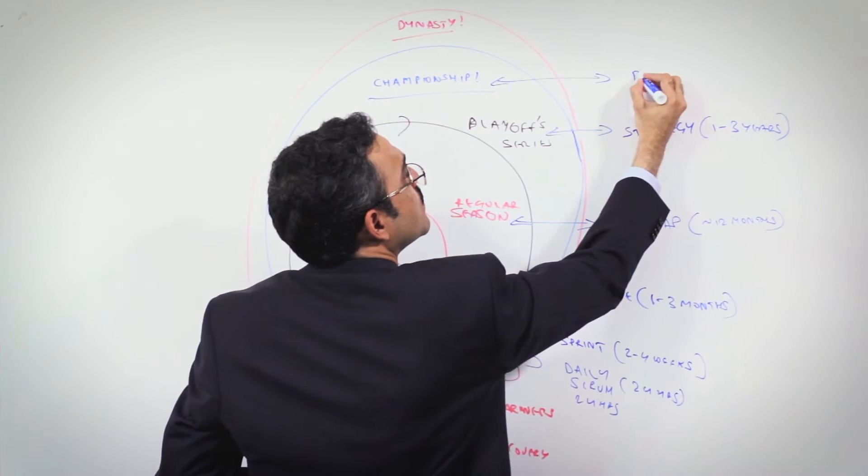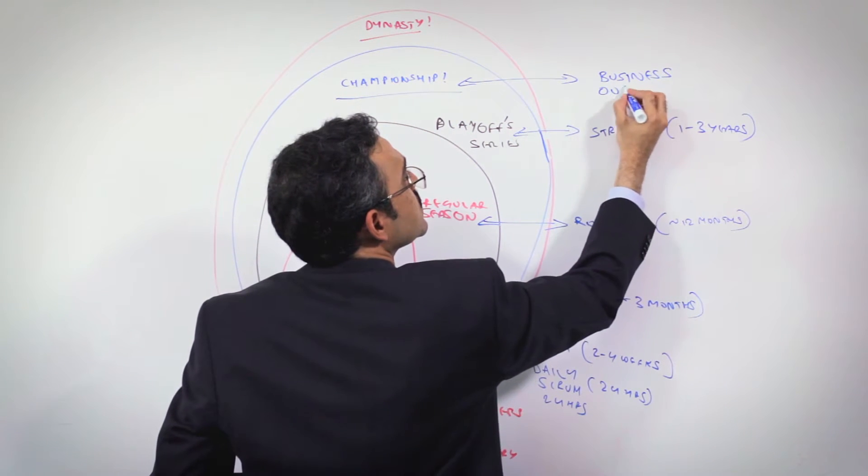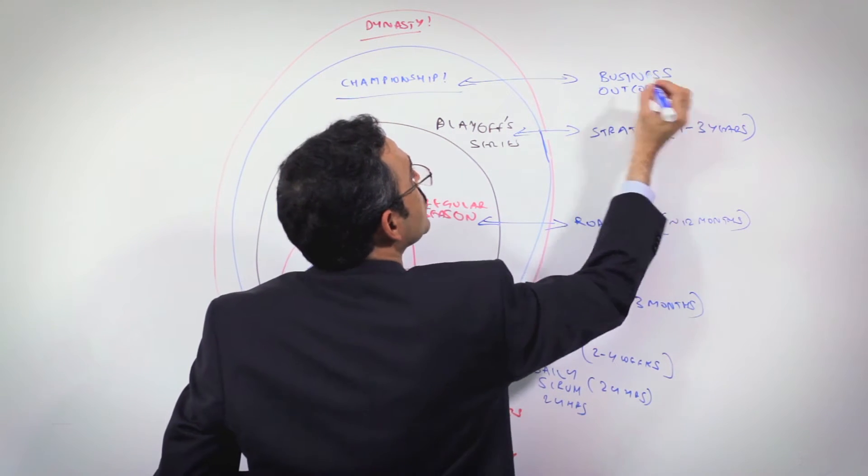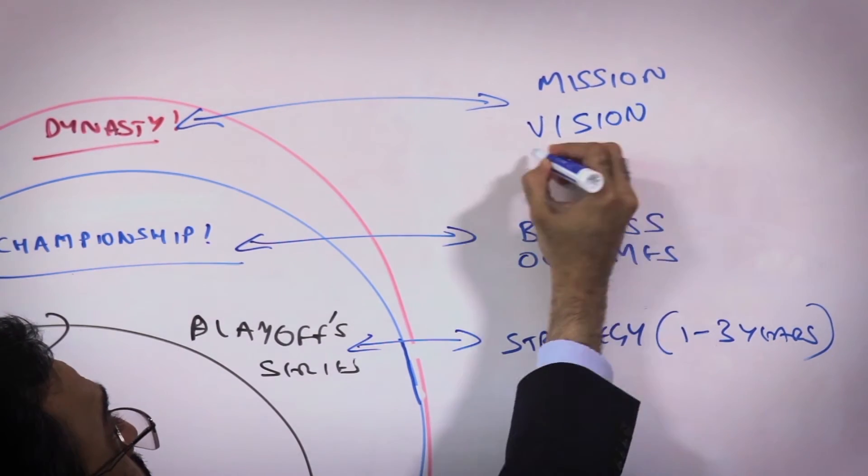And then finally, the next higher level could be your business outcomes you want to accomplish - the vision and mission of the company. Why does your company exist? Who do you exist to serve?